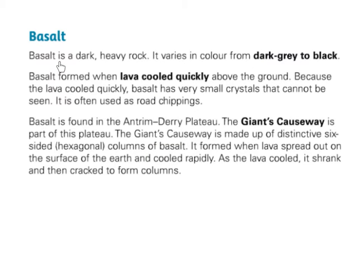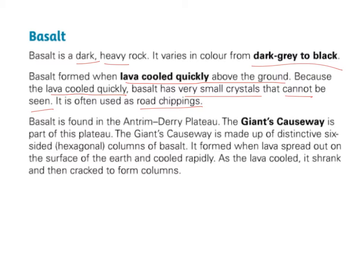Basalt is a dark, heavy rock. It varies in colour from dark grey to black. Basalt formed when lava cooled quickly above the ground. Because the lava cooled quickly, basalt has very small crystals that cannot be seen. It is often used as road chippings. Basalt is found in the Antrim-Derry Plateau. The Giant's Causeway is part of this plateau.